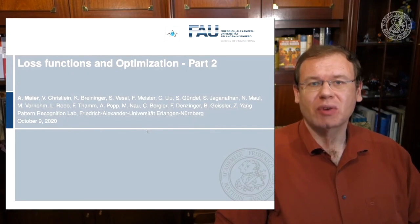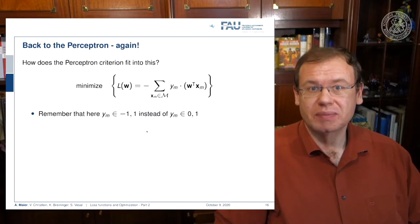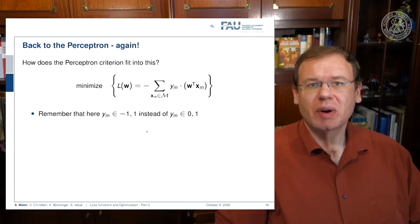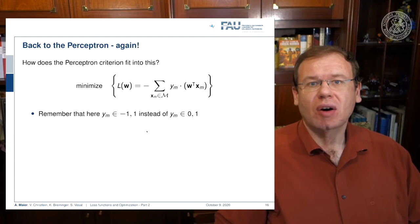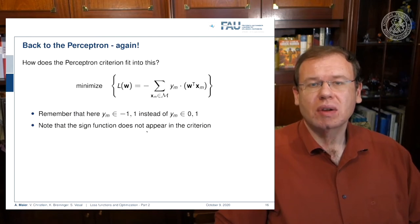I want to look into a couple more optimization problems. One of the optimization problems that we've already seen is the perceptron case. You remember that we were minimizing a sum over all of the misclassified samples.